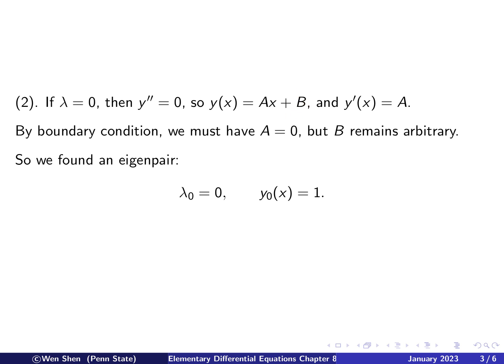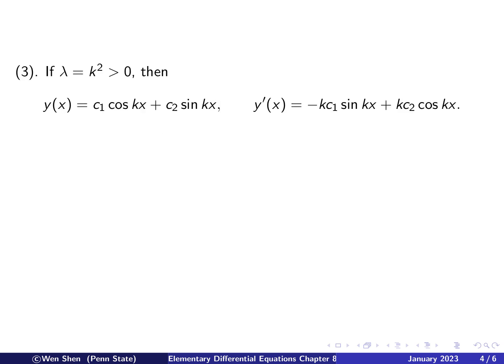It's a linear homogeneous equation. So we found one eigenpair where the eigenvalue is 0, and the eigenfunction is the constant function 1. So note that this result is very different from the first example, where for the first example, when lambda is 0, we only get a trivial solution, which we discard.